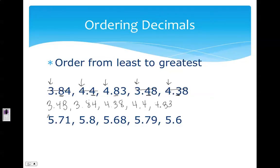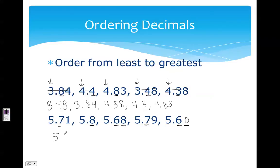Let's look at the second example. In this example they all have five as their whole number, so I'm going to look at the tenths place first to find the smallest number. I have seven, eight, six, seven, and six. Six is the smallest, and I also notice I have six in two different places, so now I have to move to the hundredths place. 5.6 doesn't have a digit in the hundredths place, so I can fill it in with a zero. Now I can compare — I have an eight and a zero. Zero is smaller than eight, so I write down 5.6 as my least number and mark it out.